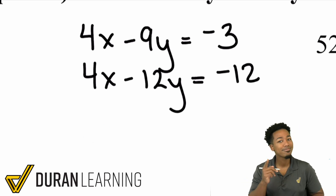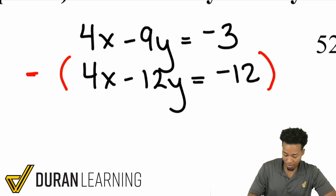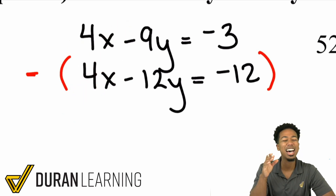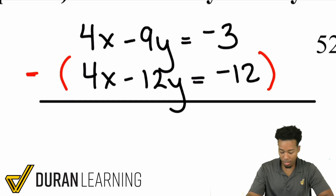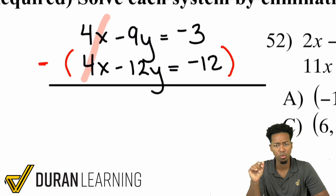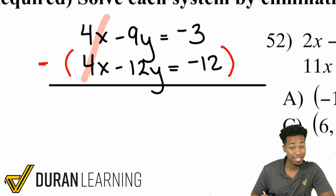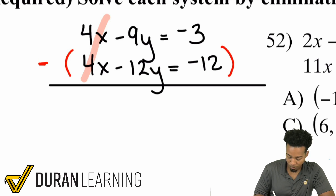What would make sense? Subtracting. Subtracting would make sense here because if you go ahead and subtract these equations, you'd have 4x minus 4x — that cancels out. But here's the really big mistake a lot of people make. Remember, if you are subtracting an entire equation from another, you need to make sure you're subtracting every component. A lot of people will think of this as negative 9y minus 12y, and that is not the case. You have negative 9y minus negative 12y.